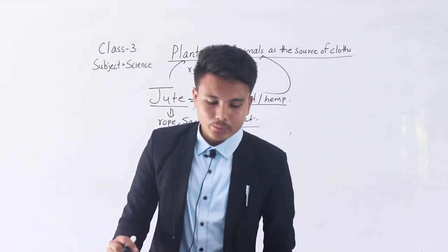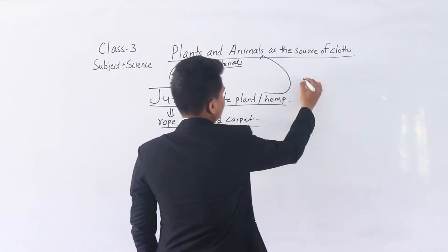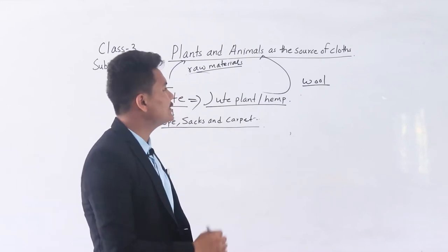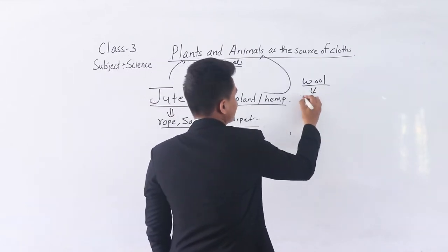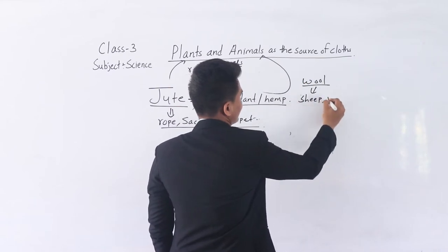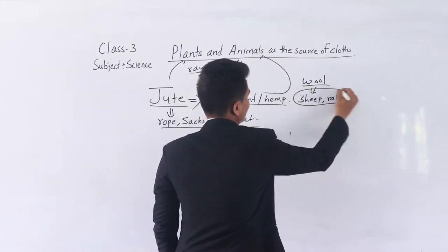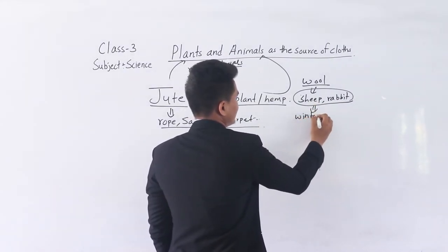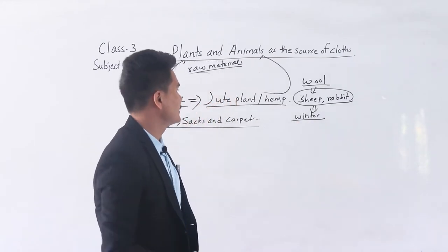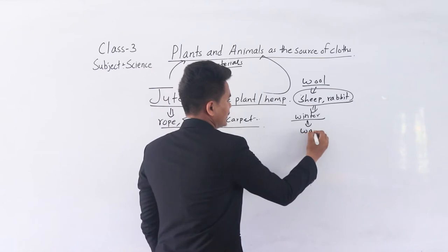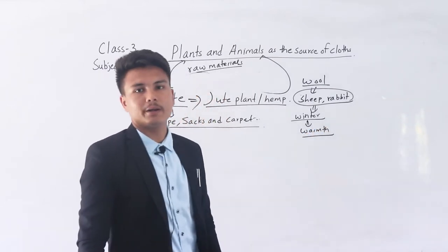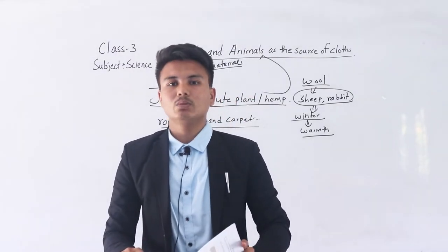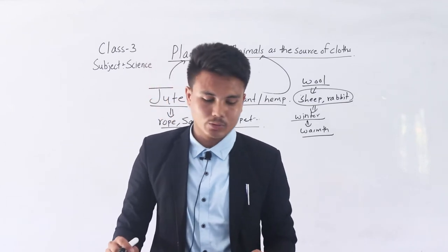We wear woolen clothes especially in winter season. The main sources of wool are sheep and rabbit. Woolen clothes give us warmth and keep our body warm. Woolen coats are very warm and very good for winter season.